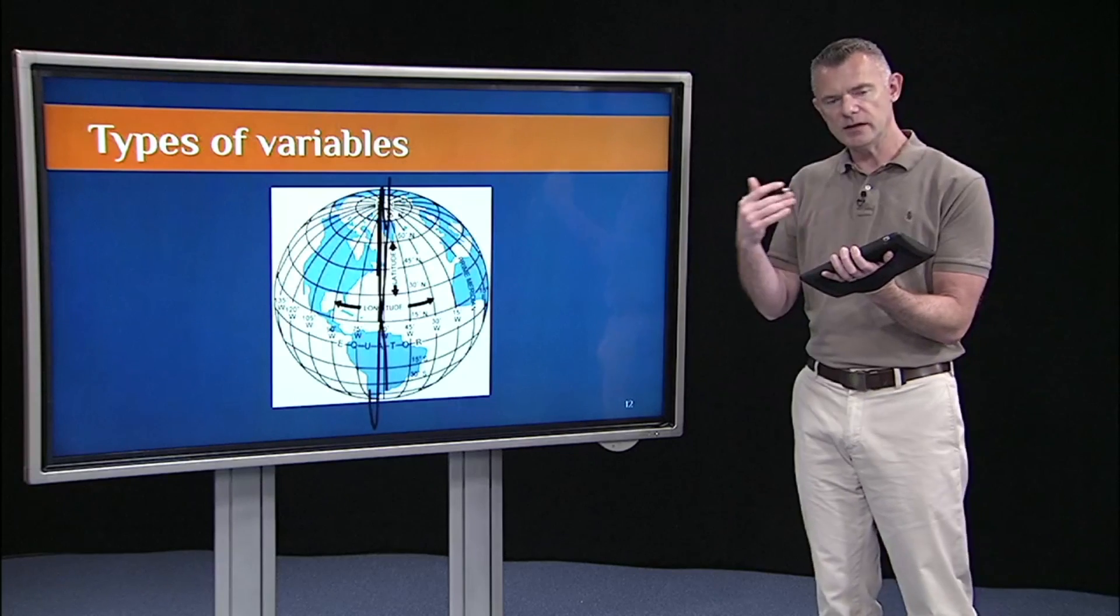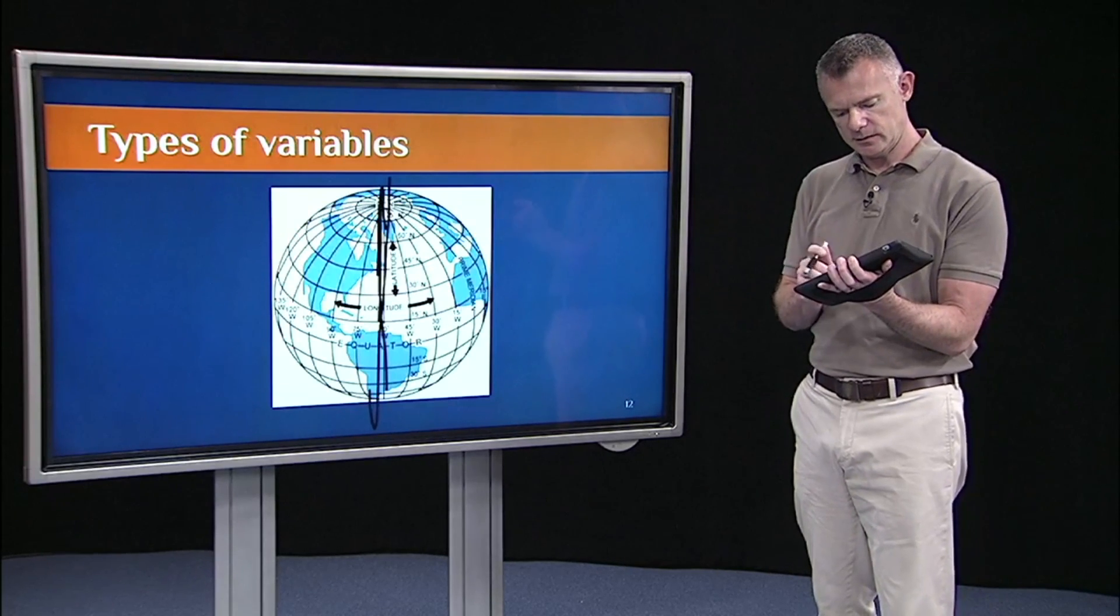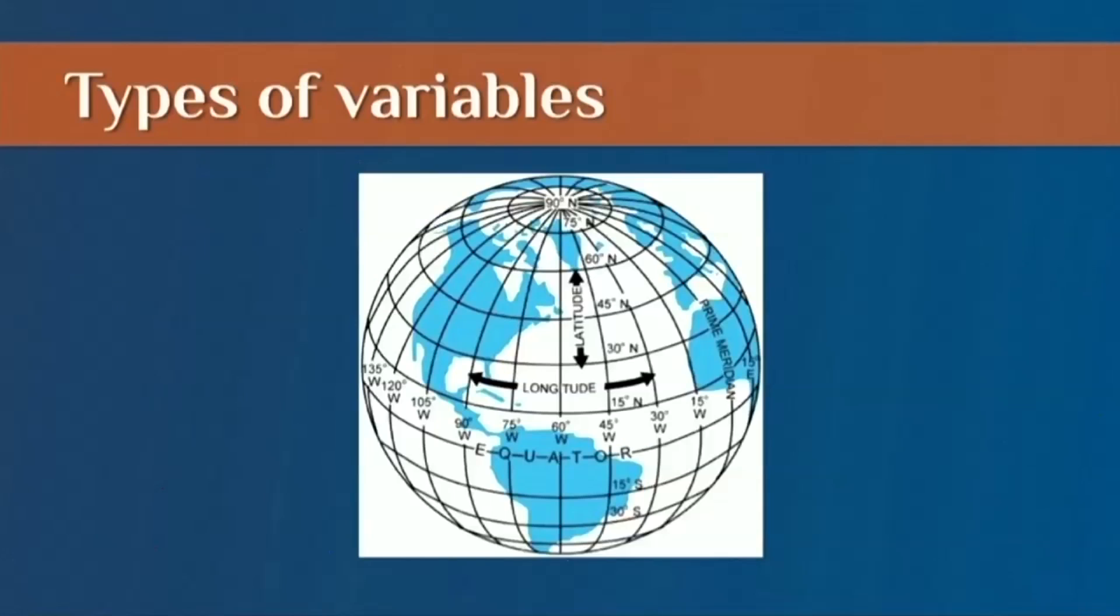The point of this interval variable is the distance between, say, zero degrees latitude, which is the equator, which is right here. The distance between zero degrees latitude and 30 degrees latitude is the same as the distance between 30 degrees latitude and 60 degrees latitude. So this distance is equal to this distance. That's the point of an interval variable—the intervals between each unit are equal. So we call them equal interval variables.